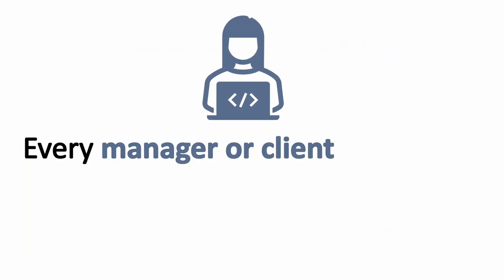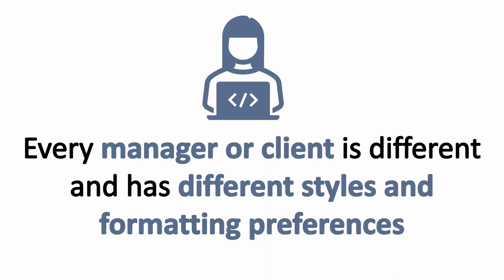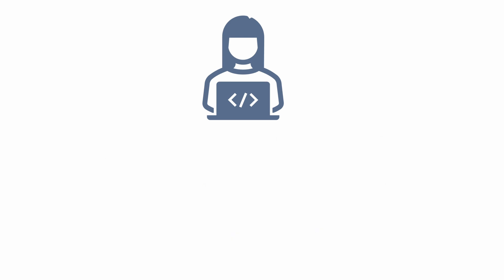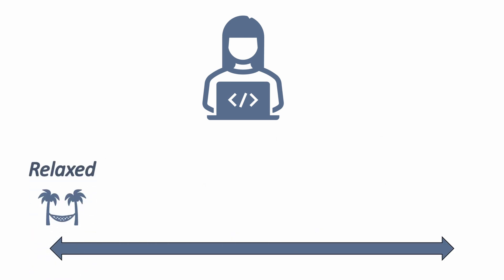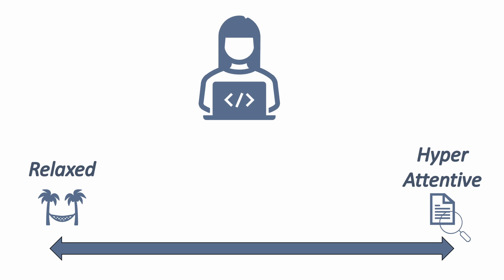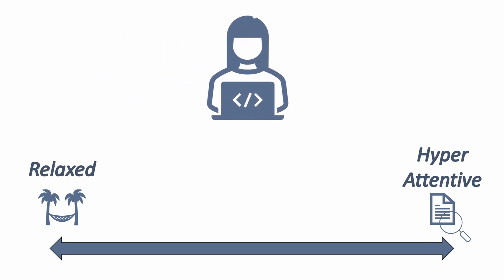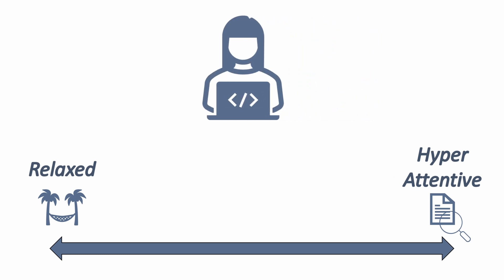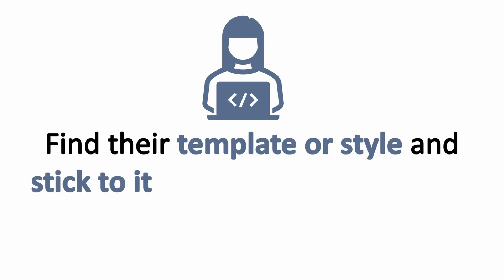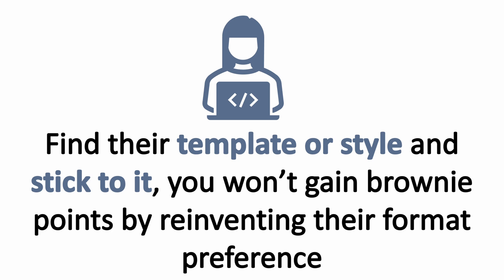Every manager is ultimately going to be different, and they'll have particular styles and formatting preferences. Every manager falls somewhere on this scale of incredibly relaxed and not particular at all, to hyper-attentive and in the details of every little comma or semicolon. The most important thing will be understanding where your manager falls on this scale, so you can adjust to their specific style and spend time where it's actually going to benefit the overall answer. My number one advice here is find your manager's template or style and stick to it. You're not going to gain extra points by trying to reinvent their formatting preference, so find that one style that is always that checkmark yes and stick to it.